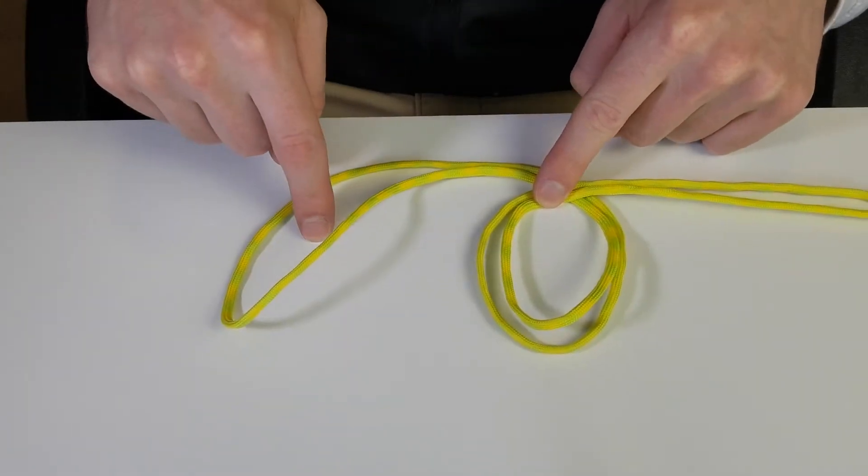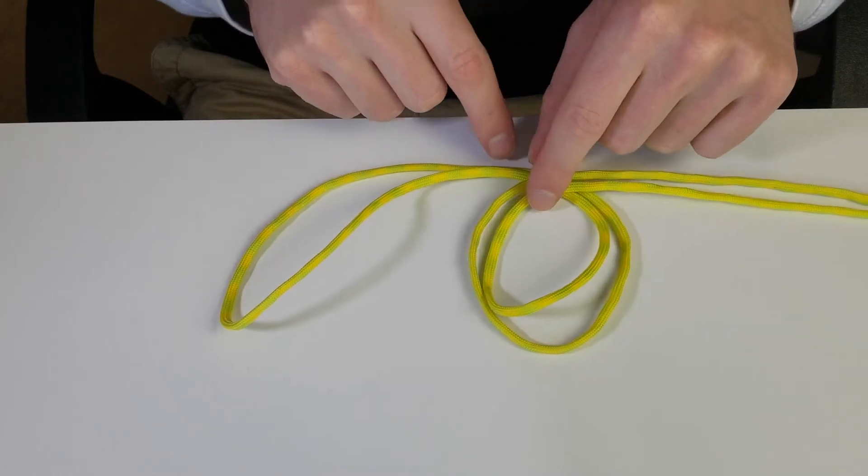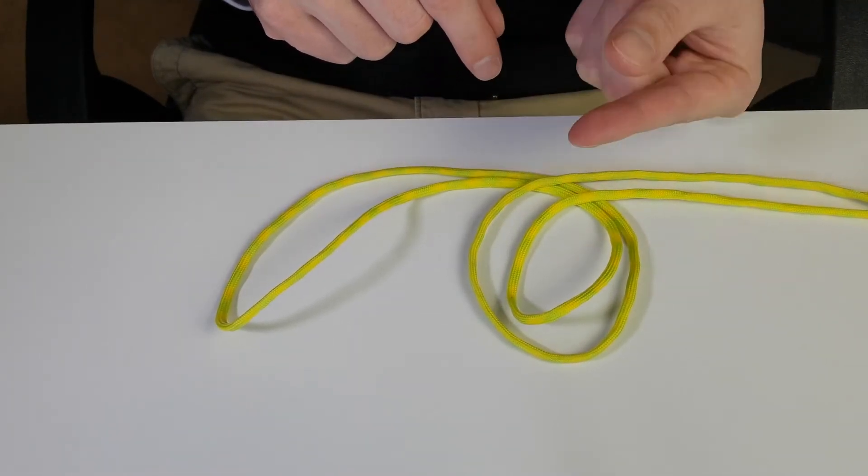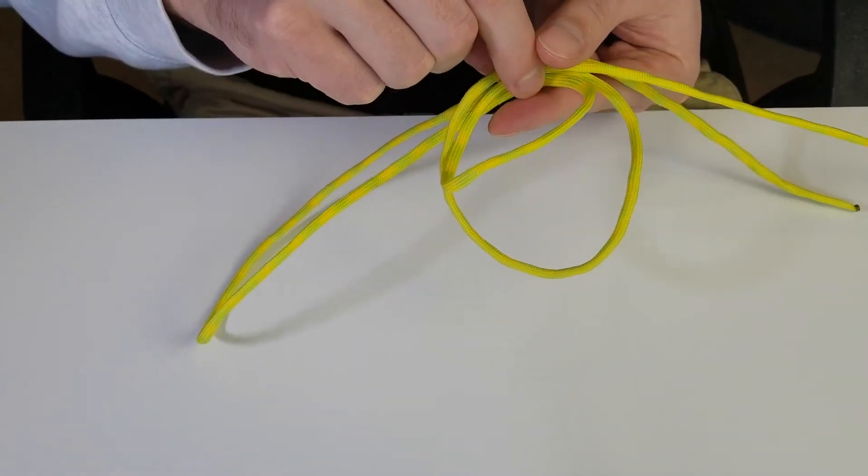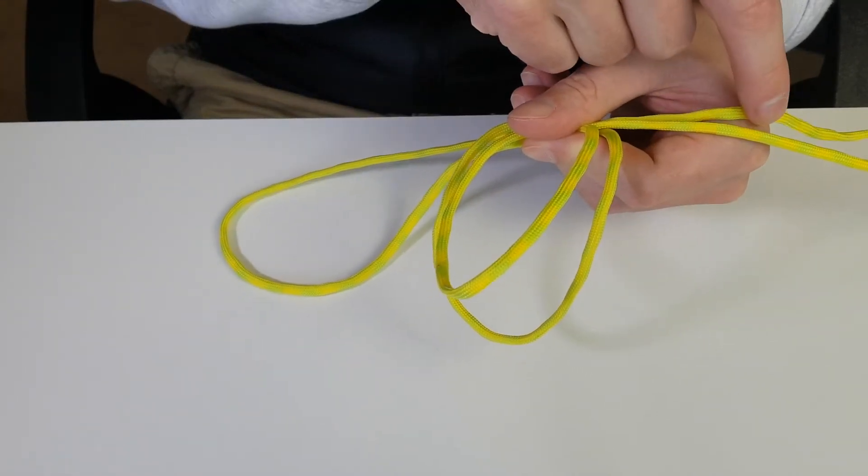All right, so we have one loop here and one loop here. What you then want to do is grab this loop where all the lines cross and hold it with your finger and thumb. So we're just going to hold it just like that. Right, so we got one loop, one loop, and then we got our main line and tag end here.